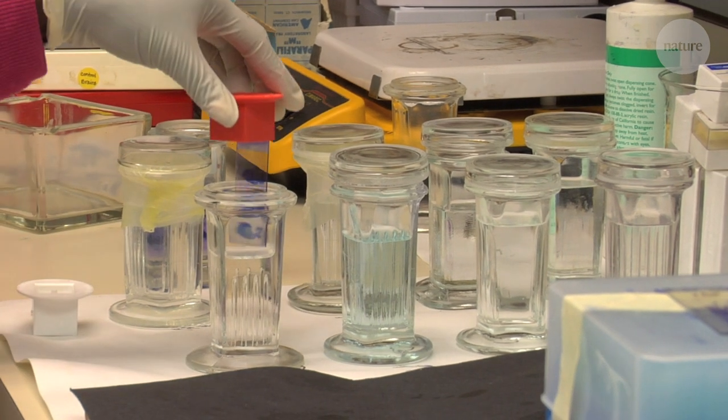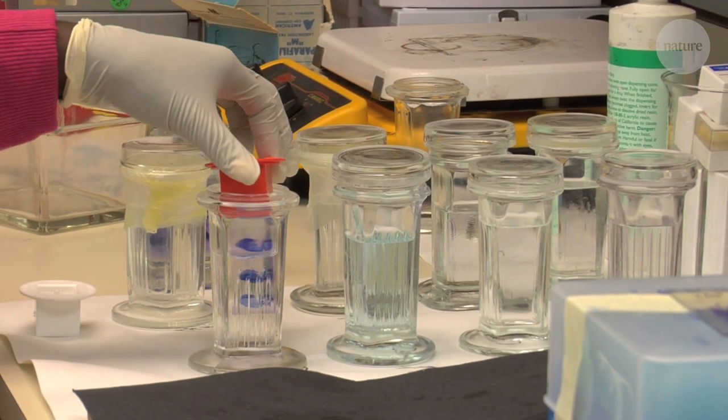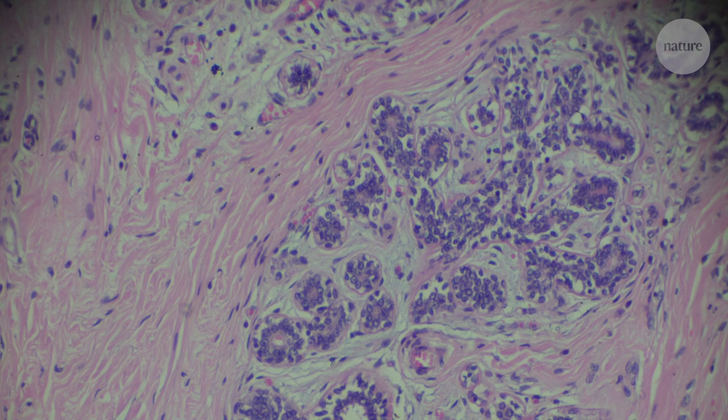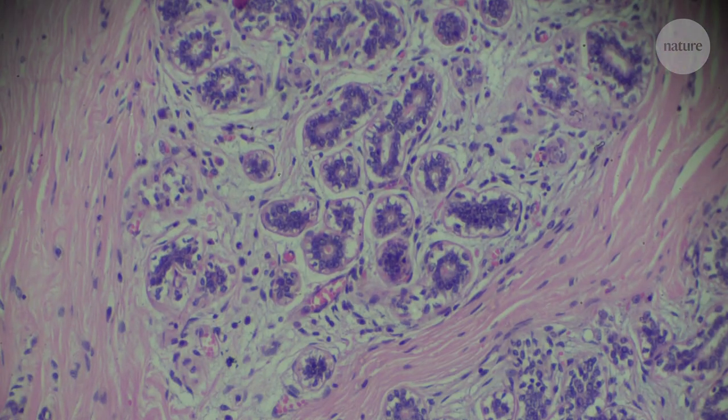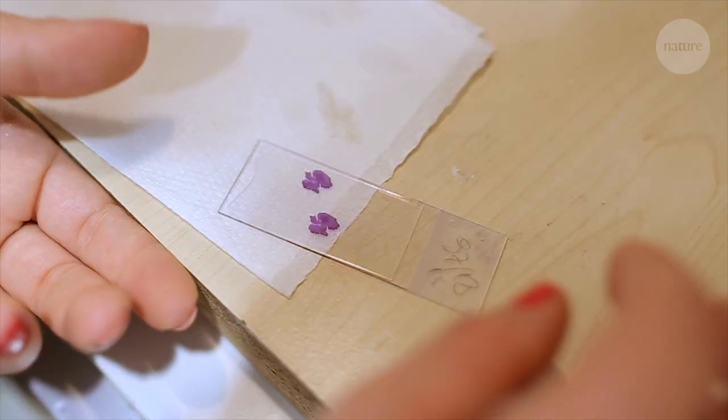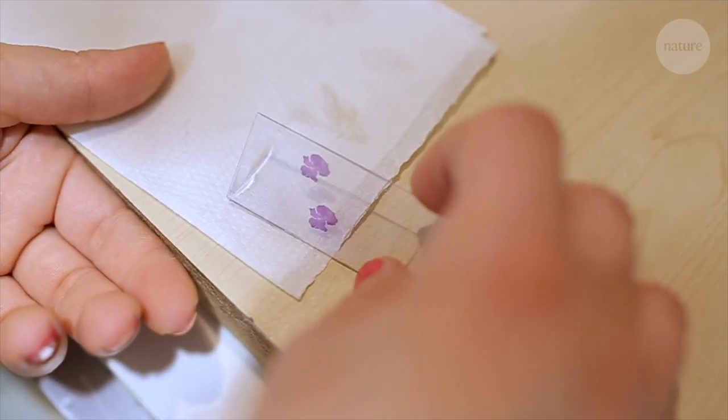You may remember staining slides in biology class, dipping them in red and purple dyes to reveal microscopic structures. Pathologists use similar techniques to diagnose diseases like cancer.